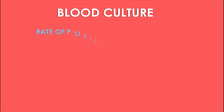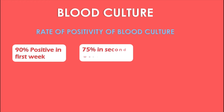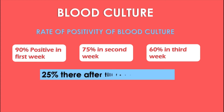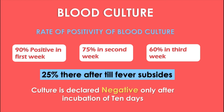The rate of positivity of blood culture is very high in the first week — 90% positivity. In the second week, it is 75%, and in the third week, 60%. Thereafter, until the fever subsides, there is 25% positivity. Therefore, the culture is declared negative only after 10 days of incubation. When the broth is inoculated for blood culture, it should be continuously subcultured and incubated for a total of 10 days before being declared negative.